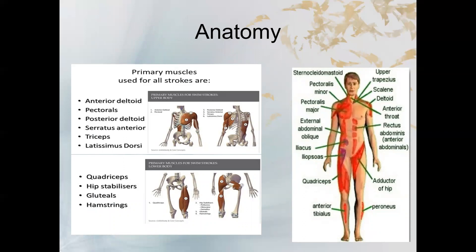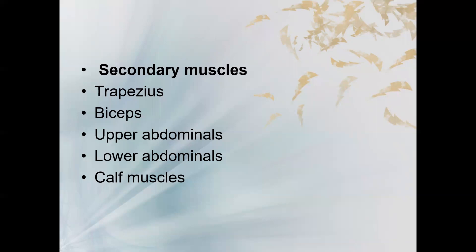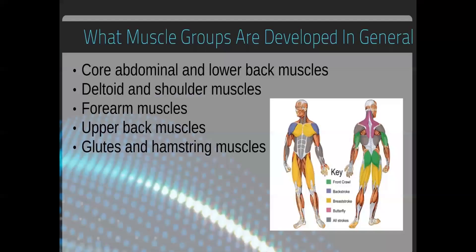The primary muscles used across all strokes include deltoid, pectorals, anterior deltoid, serratus anterior, triceps, latissimus dorsi, quadriceps, hip stabilizers, glutes, hamstrings, sternocleidomastoid, pectoralis minor, pectoralis major, obliques, iliopsoas, rectus abdominis, scalene, and trapezius. The secondary muscles include trapezius, biceps, upper and lower abdominals, and calf muscles.